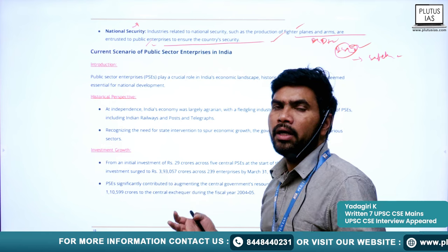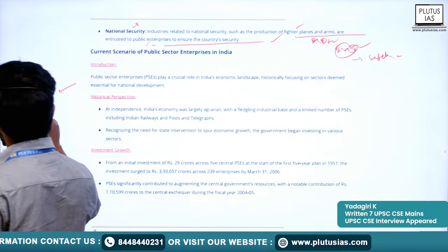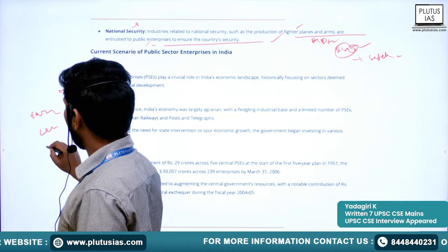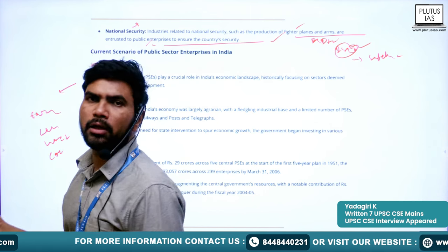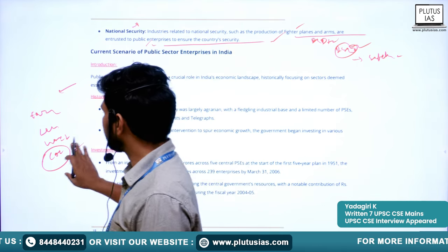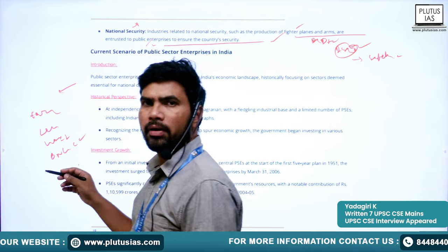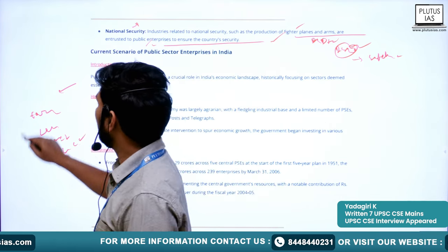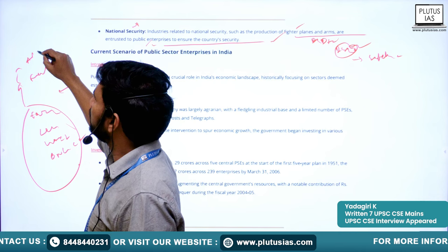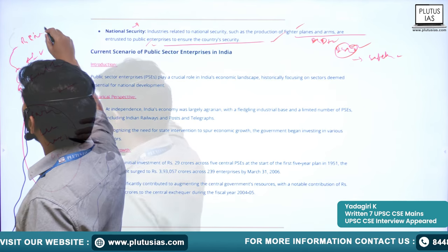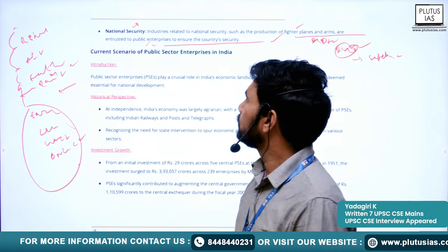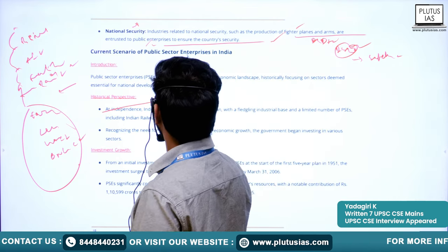Seventh is national security — industries related to national security like DRDO are entrusted to public enterprises. Production of fighter planes and arms ensures the country's security. ISRO also contributes through satellite production for the betterment of the people. There are a few examples of PSUs performing well, like LIC, GAIL, Coal India Limited (though in a monopolized environment), and ONGC. However, fertilizer companies, Air India, BSNL, and Railways are known for inefficiency and loss-making. The experience is mixed, and disinvestment — alternatively known as privatization — has been introduced to address this.